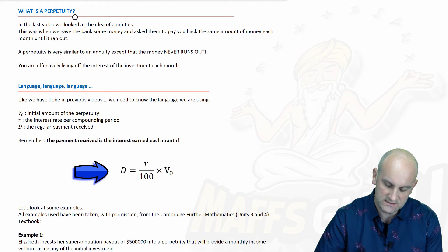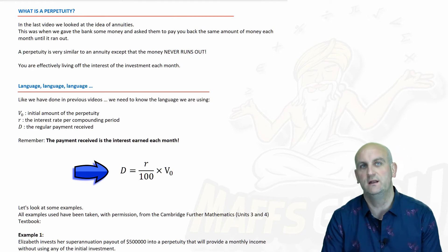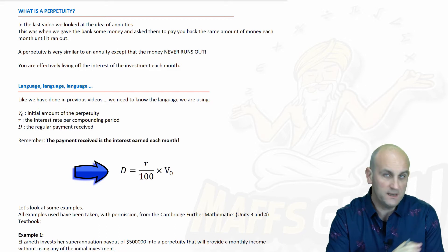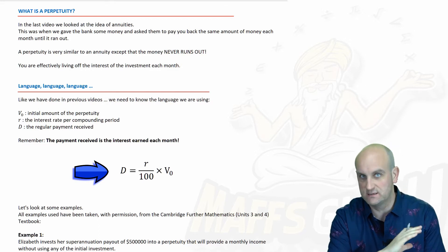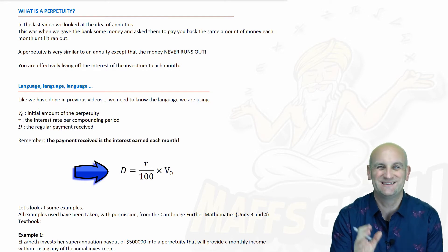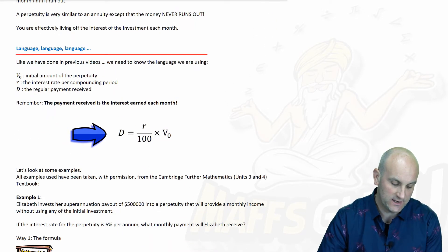So what is a perpetuity? It is basically a bank account. The money you put in and the money that stays in that account is constant. It doesn't change. Your future value and your present value is exactly the same. The only thing you're gonna do is live on the interest.